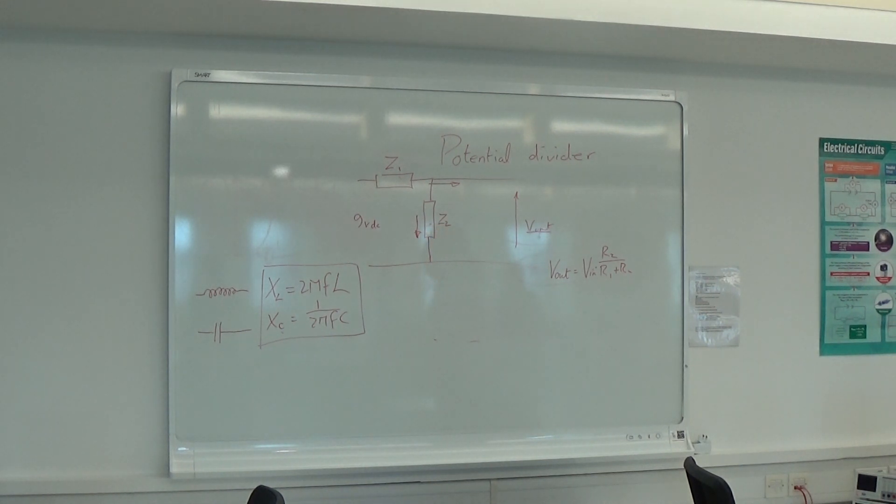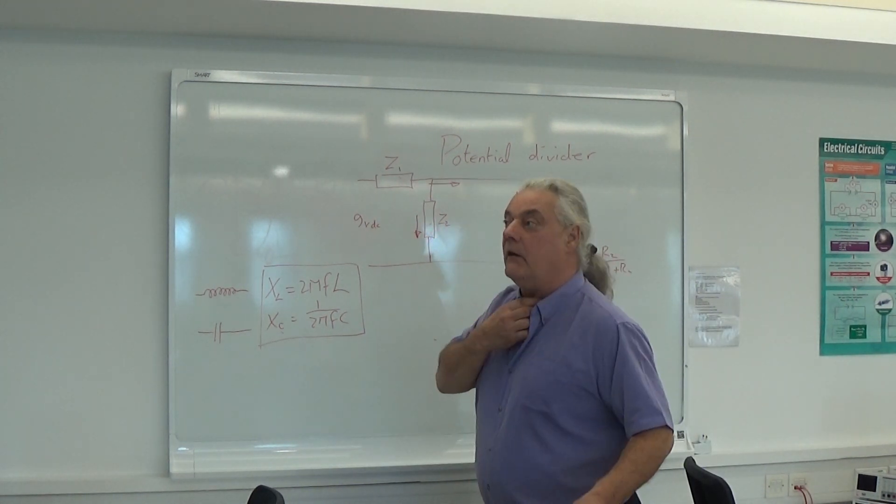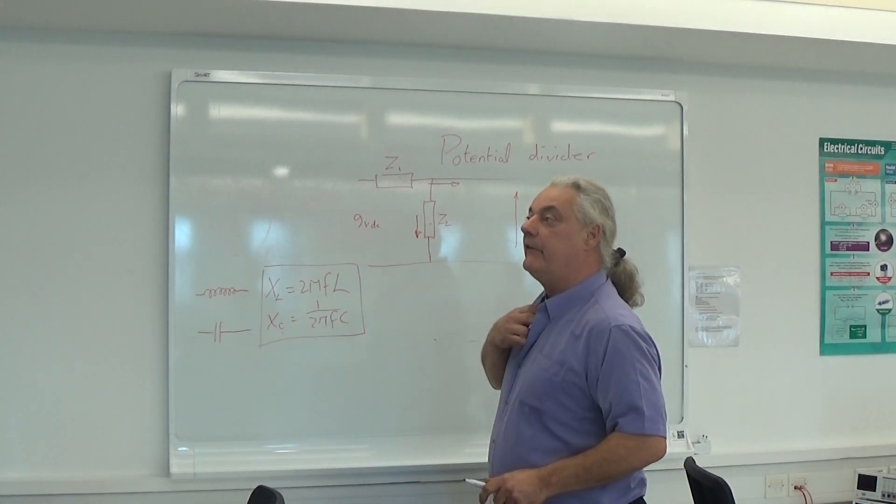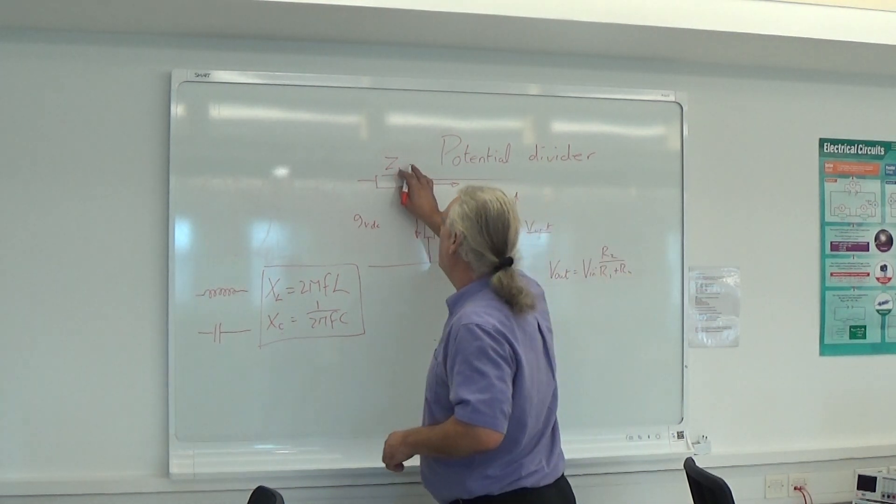We're now dealing with AC components. But what's Z? What's Z1? What's Z2? Well, look at our picture up there. So in that particular case, Z1 was just R.